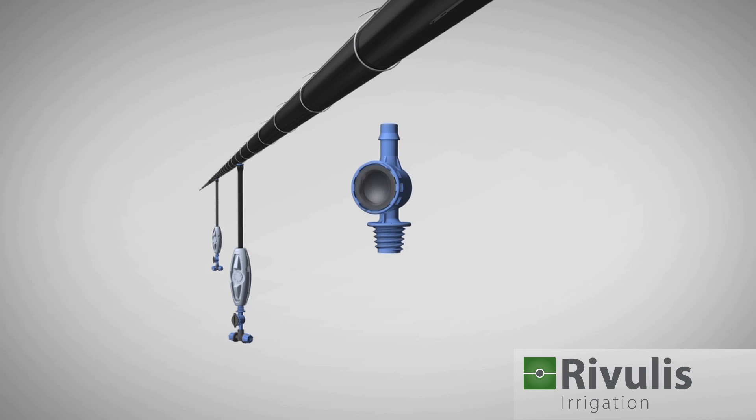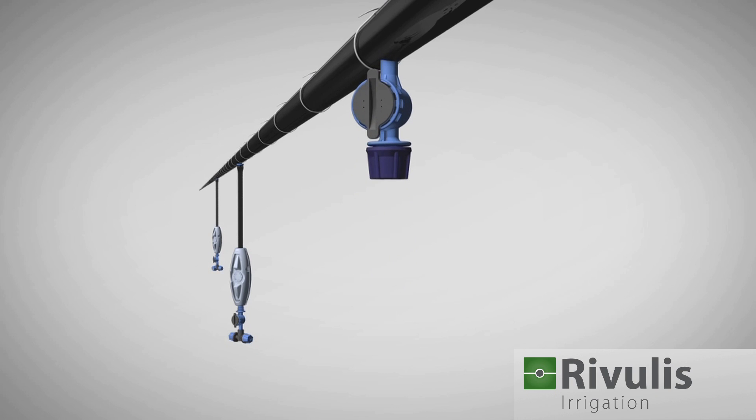In case of installation constraints, a single nozzle fogger can be installed onto the lateral, with the nozzle and cap mounted directly on the anti-leak device.